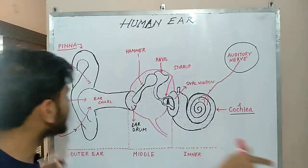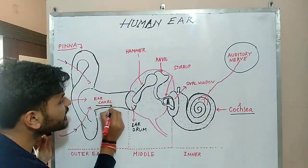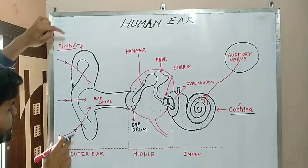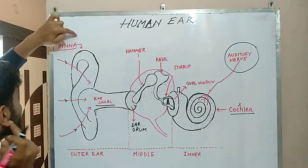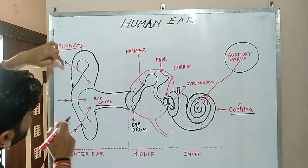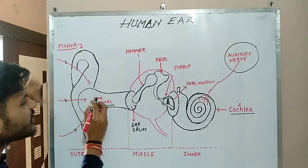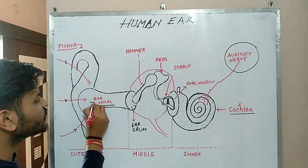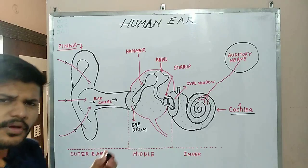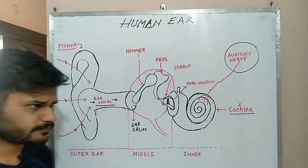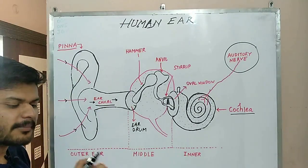This is the ear pinna, which collects sound from different directions and transfers it to our ear canal. As we all know, sound travels in a compression and rarefaction pattern.